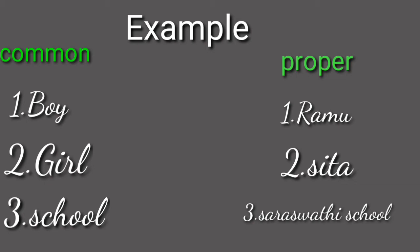Second example: 'girl' is a common noun, but a particular name is a proper noun. Third example: 'school' is a common noun — it refers to a group. But a particular name like 'Saraswati' is a proper noun. These are the differences between common and proper nouns.